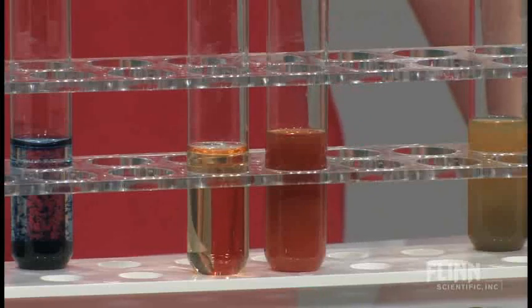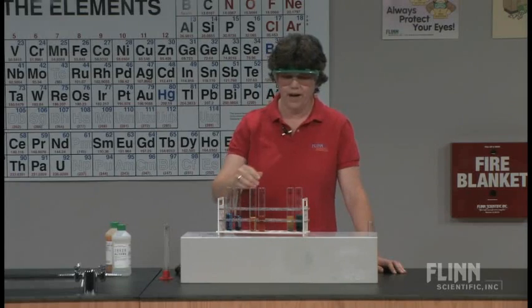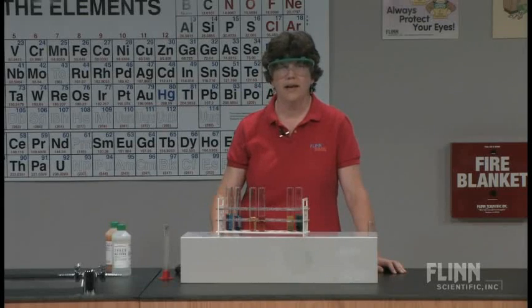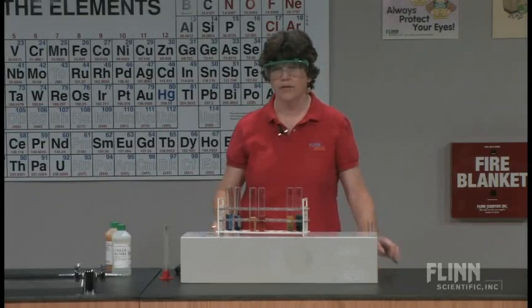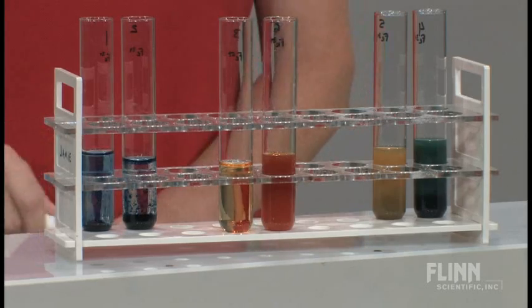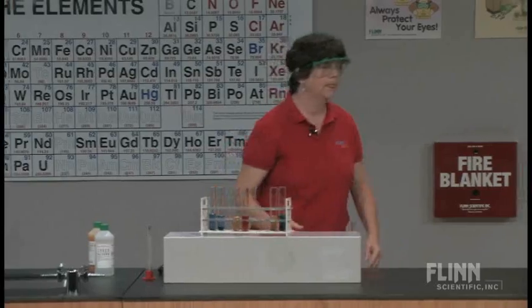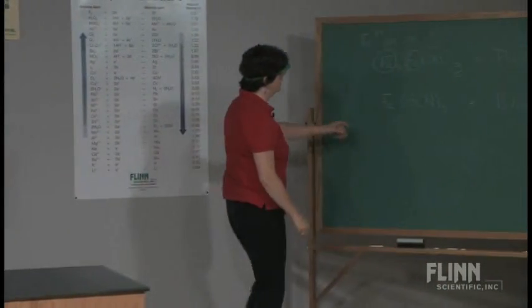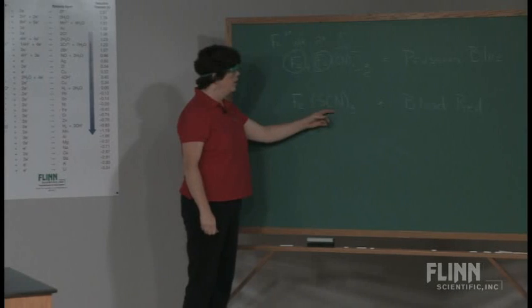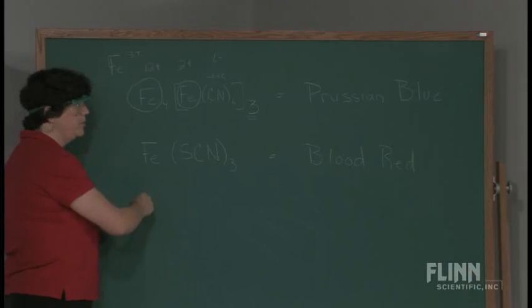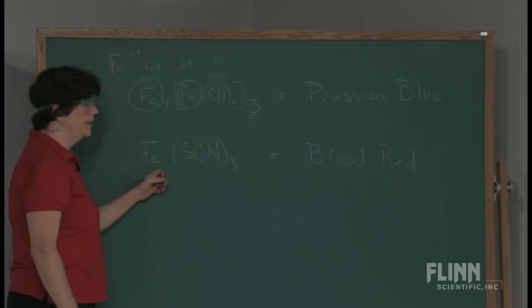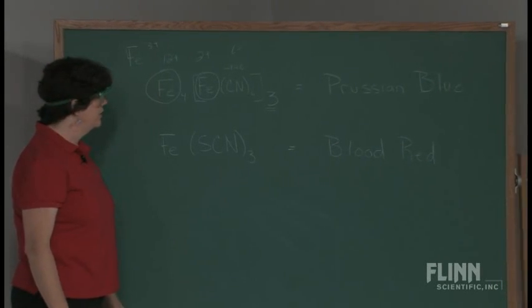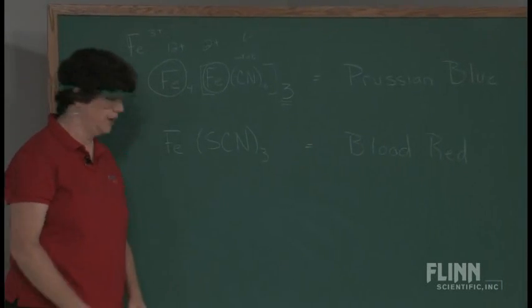Now, why are we doing this? We're showing that the different oxidation states of iron produce different colors depending on the complex ion they're in formation with. Over on the board again, I have the formula for the blood red iron thiocyanide, which is the Fe three plus ion. This does not work with the Fe two plus ion. We do not get the blood red. So this is a test for iron three plus ions.